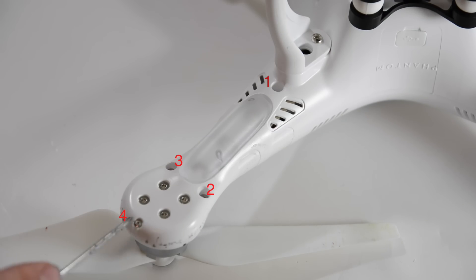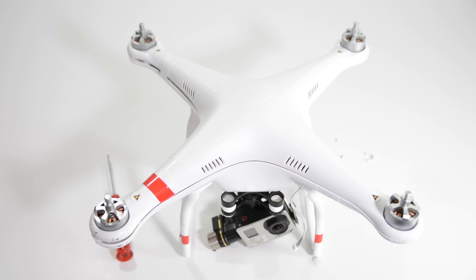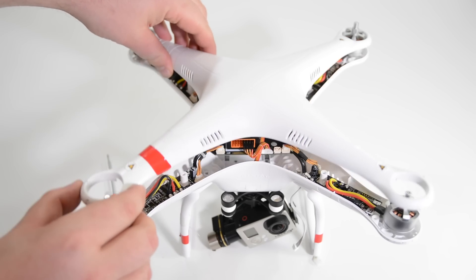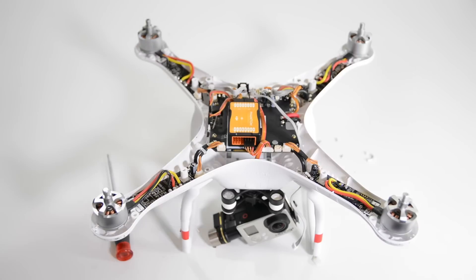Now once we have all 16 screws removed we can lift the top and when we lift the top there will be the GPS connected and that will just disconnect, it slides right out, it's nice and easy and we'll just set that aside.